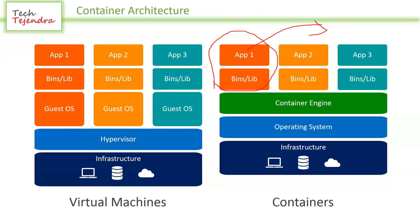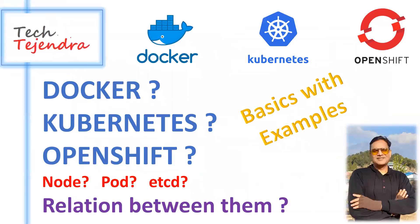So we started with Docker, then over Docker we have Kubernetes, and then from Kubernetes comes OpenShift. In the next videos we will understand all these concepts in more depth with more examples. In this video we understood Docker basics, the layer concept, and how it all relates. We will meet again in the next video — thanks for watching!